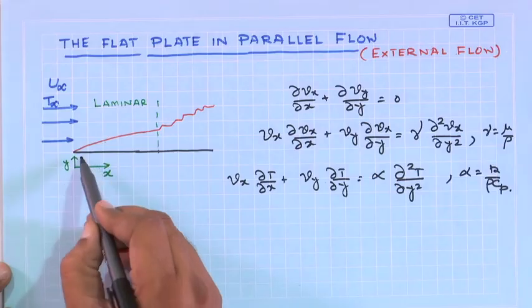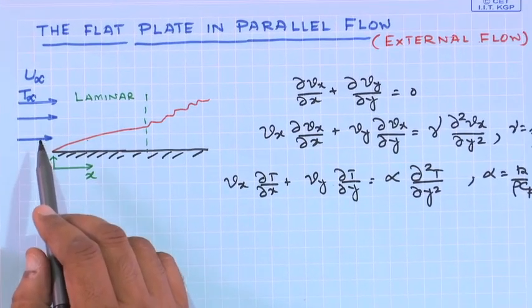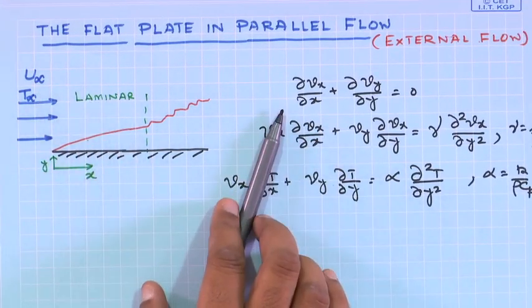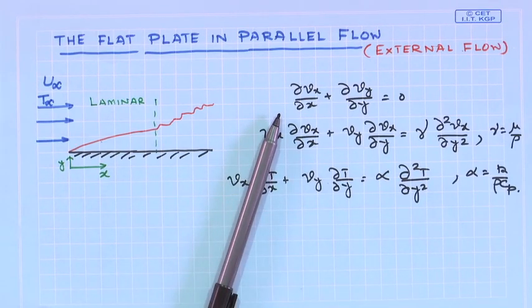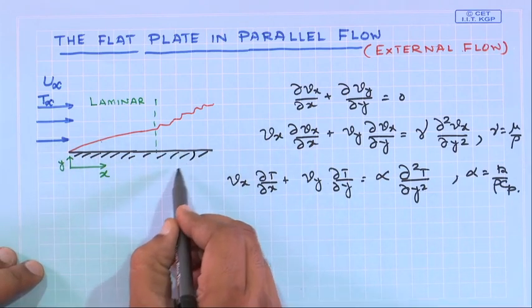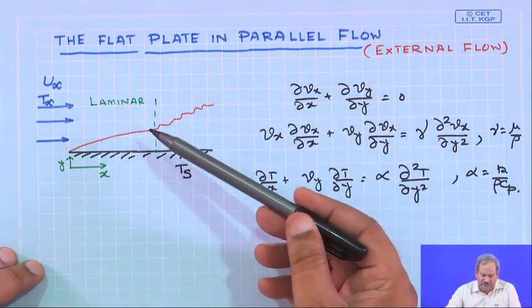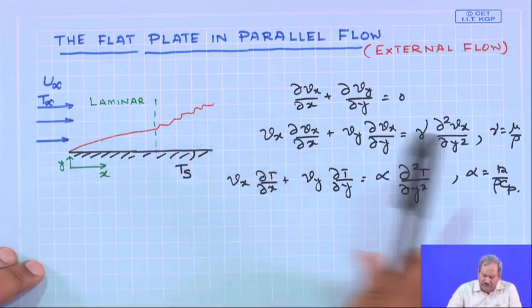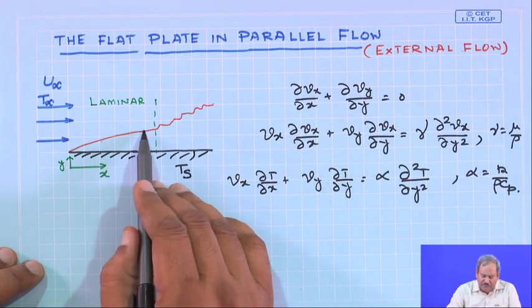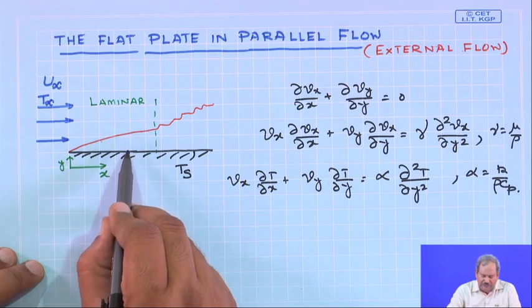We will first look at the form of the equations derived in the previous class. This is a flat plate placed parallel to the flow, where the flow comes with velocity U∞ and temperature T∞. When this fluid contacts the surface at temperature Ts, there is heat exchange between the surface and the fluid. Temperature changes from Ts to T∞ within this thin thermal boundary layer.